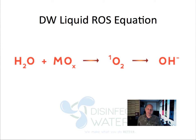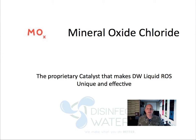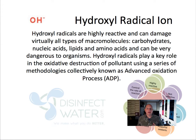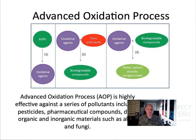This is our equation for Liquid ROS. We take water and mix it with our proprietary catalyst, which is a mineral oxide chloride — that's what makes it unique. After that, you're left with singlet oxygens, a high-energy form of oxygen that is highly reactive with organic compounds and breaks things down very effectively. We also have an ongoing effect through the hydroxy radical ion. It's known as an advanced oxidative process, which means it breaks down toxic pollutants into biodegradable compounds and then further into water, carbon dioxide, and inorganic salts — breaking things down over stages.